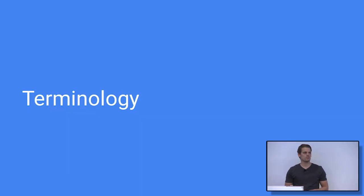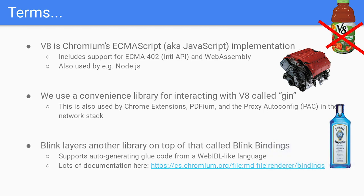Let's first define some terminology that often comes up with JavaScript and V8. V8 is Chromium's ECMAScript implementation, named after the car engine type. Many names of components in this project were inspired by this project name. V8 not only implements JavaScript, but also WebAssembly. It's not only used in Chrome, but also in Node.js. In Chrome and Blink, we use a convenience library called Gin for interacting with V8, which is also used in other projects like the PDF viewer.